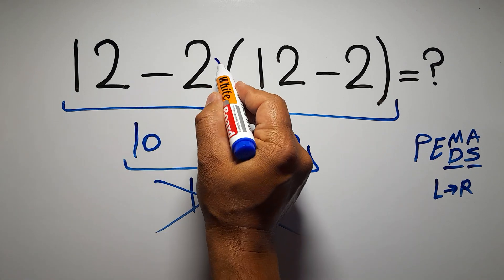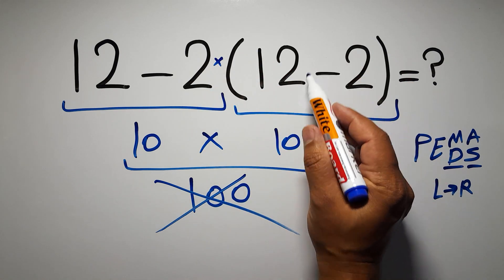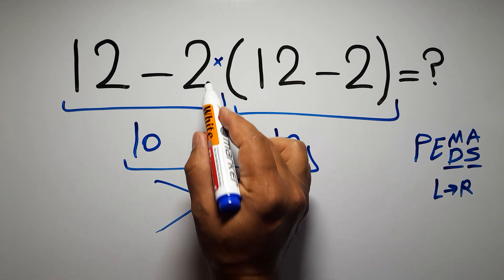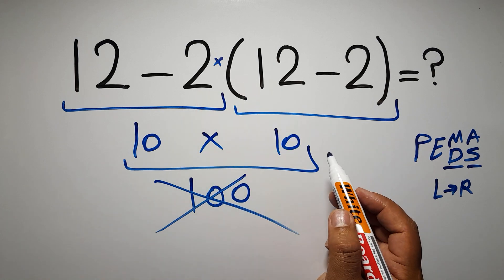In this expression, we have one subtraction, one multiplication, and one parentheses. Inside this parentheses we have one subtraction. We have a multiplication because in mathematics when a number is placed next to parentheses it means multiplication, and we usually don't write the multiplication sign for brevity.